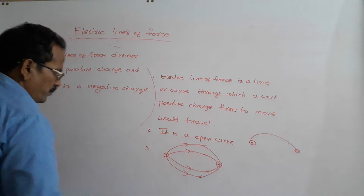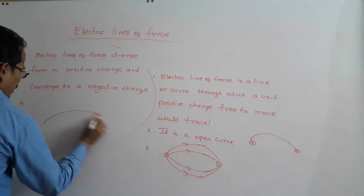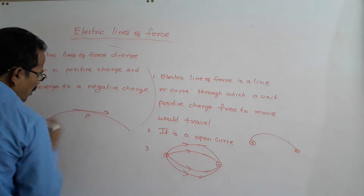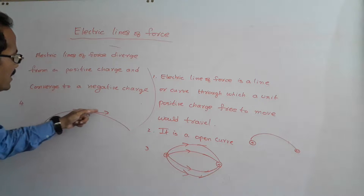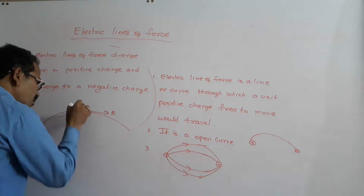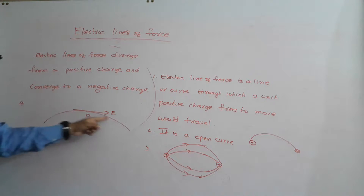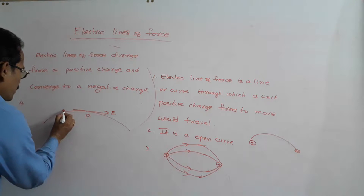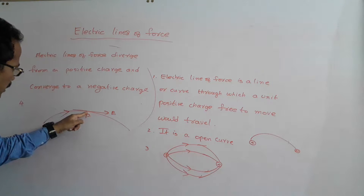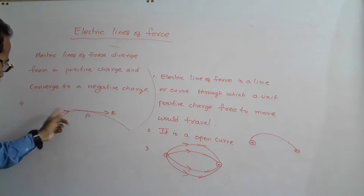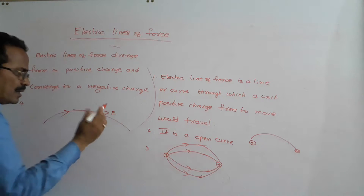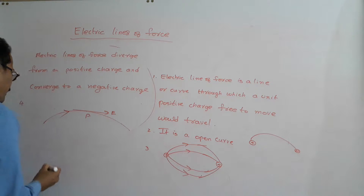Point number 4: Consider an electric line of force. At any point, if a tangent is drawn to the electric line of force, that tangent gives you the direction of the electric field E at that point. A tangent drawn at any point to the electric line of force represents the direction of E at that point.